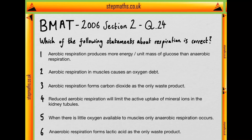Statement one says that aerobic respiration produces more energy per unit mass of glucose than anaerobic respiration. We should know this to be true. Aerobic respiration is more efficient in terms of generating more energy per unit mass of glucose. The effect is many times fold, so for long-term endurance-based exercise aerobic respiration generates sufficient energy, whereas anaerobic respiration is generally used for short bursts of energy.